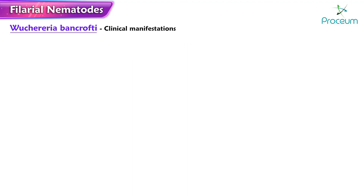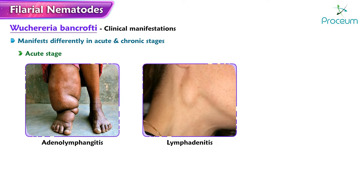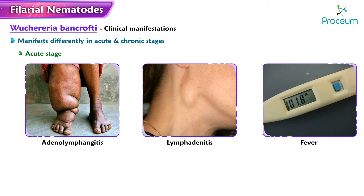Clinical Manifestations: Clinically, Wuchereria bancrofti infection manifests differently in acute and chronic stages. In the acute stage, it shows adenolymphangitis, lymphadenitis, and fever.